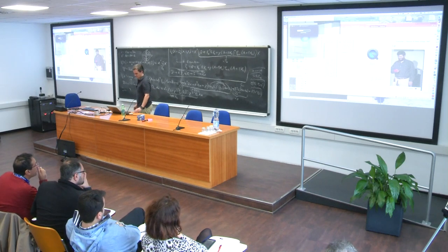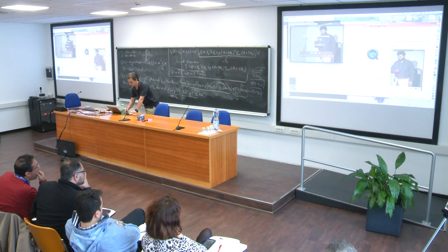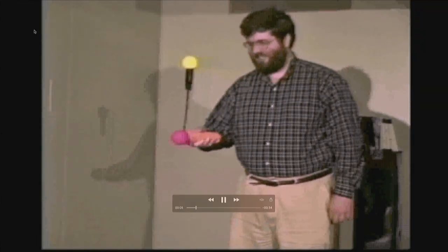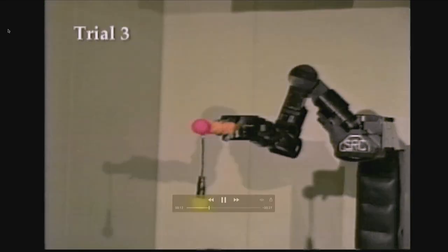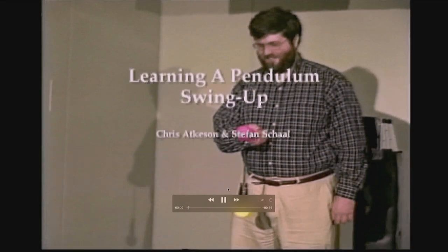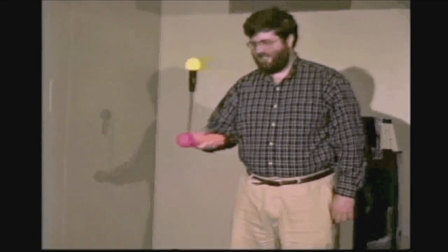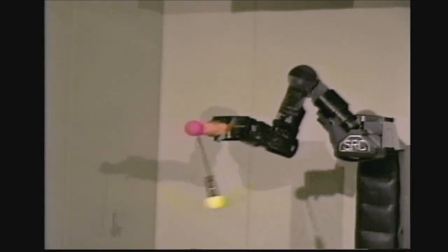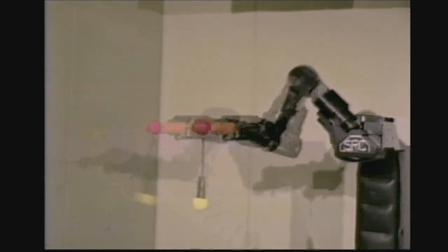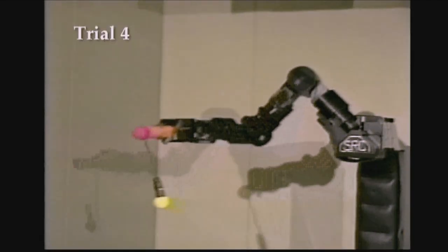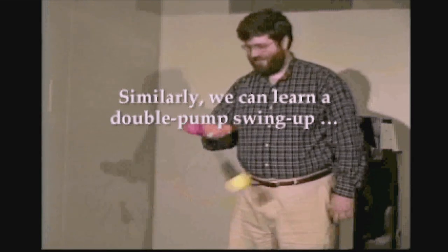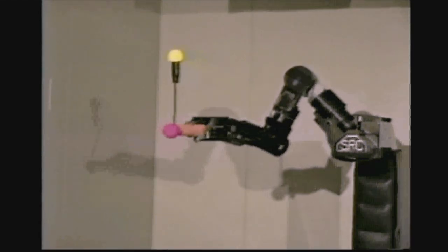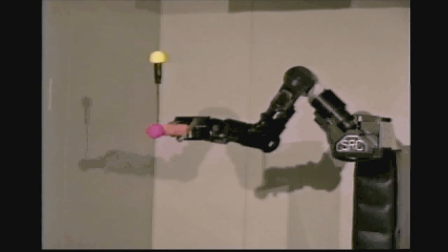In the swing-up video, you see how the system learns to pump energy in and becomes better on a trial-by-trial basis. This is from the late 1990s. Between trials, Chris needed a night to train a shallow neural network as a forward model and reward model, then do trajectory optimization on it. In the next day he could run the next trial — computation was really the bottleneck.